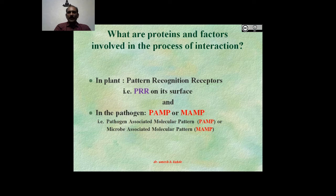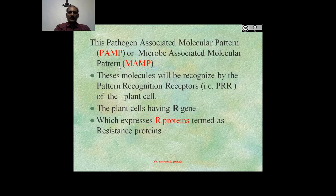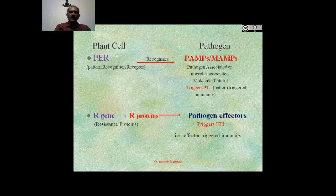In plants, there are pattern recognition receptors — PRR — on its surface, while in plant pathogens, PAMP or MAMP, that is pathogen-associated molecular patterns or microbe-associated molecular patterns, are present. These molecules will be recognized by PRR of the plant cell. The plant cell also has the R gene, which expresses the R protein termed as resistance protein. In pathogens, PAMP, MAMP and pathogen-effectors are present, which trigger ETI or PTI accordingly.